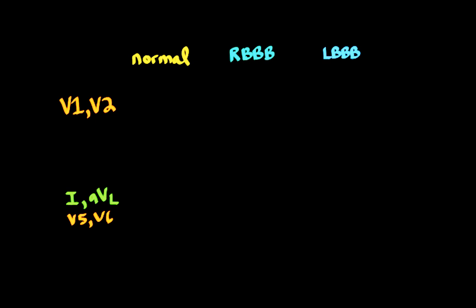Now let's compare normal waveforms in these key leads to the right and left bundle branch block. In V1 and V2, the P wave is diphasic because of the P wave vector cardiogram loop orientation. We then have our QRS complex, ST segment, and T wave — which can be inverted or upright. We label: a diphasic P wave, a septal R with a dominant S wave, an isoelectric ST segment, and a T wave that is concordant with the QRS — though it can be discordant. This is normal in V1 and V2.